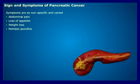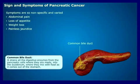Jaundice occurs when the tumor grows and pressure obstructs the common bile duct. Tumors of the head of the pancreas will more easily give rise to such symptoms.